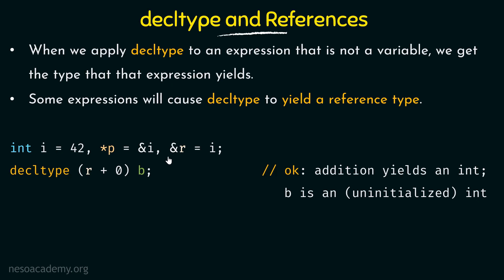r here is of a reference type, and since a reference type must be initialized, shouldn't b throw an error? No — because though r is of a reference type, when we apply addition to this reference type, it is actually going to yield an integer. The result of adding an integer type with a reference type yields an integer. Though this addition is not actually going to take place, if it did, it would yield an integer. So b is going to be a normal integer, not a reference type, and it is perfectly fine not to initialize b at this point.